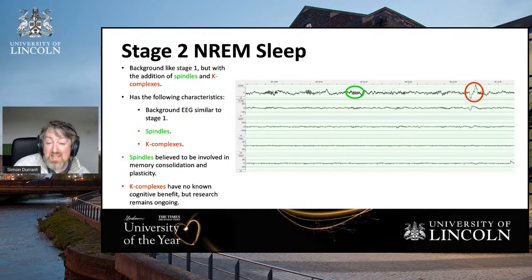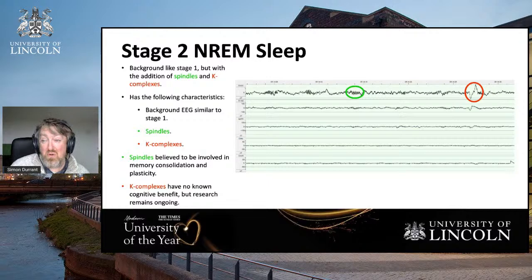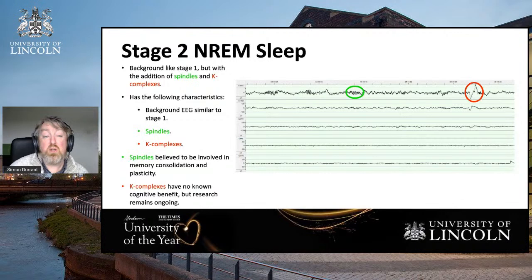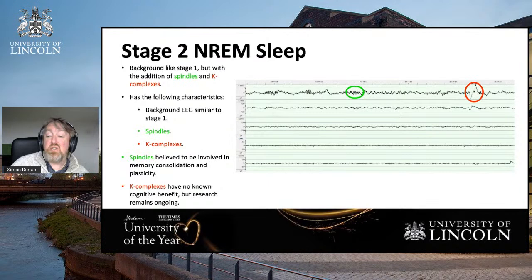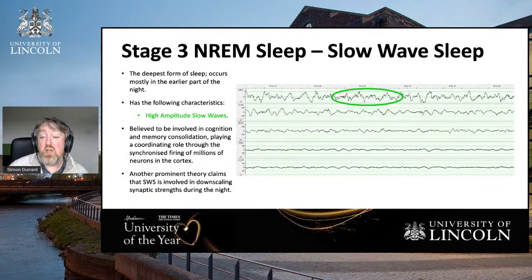Sleep spindles represent the firing of several hundred thousand neurons at once, at a higher frequency than they were firing before, for a short period — generally between half a second and two seconds — and then they just go back to doing what they were doing. Spindles are associated with what we call neuroplasticity — learning and changes in the brain as a result of learning. The other characteristic in Stage 2 sleep is K-complexes, which you can see at the end — a very large synchronized activity by potentially millions of neurons.